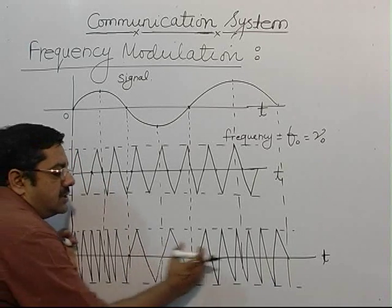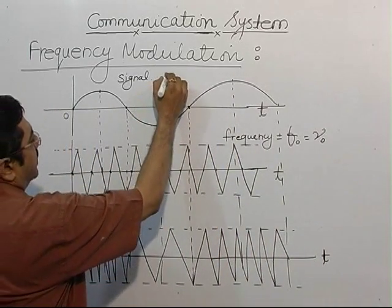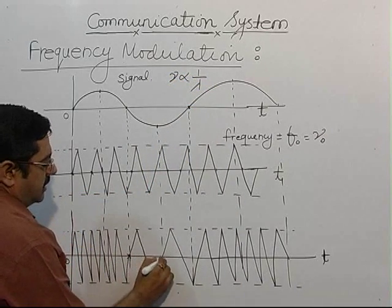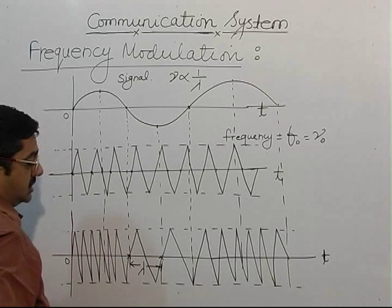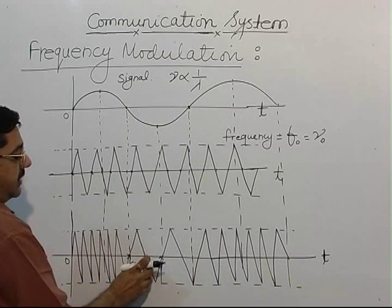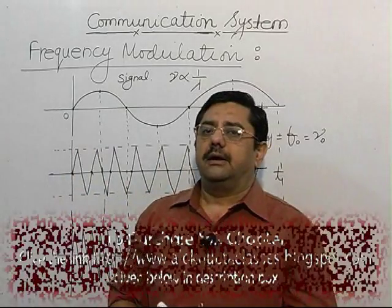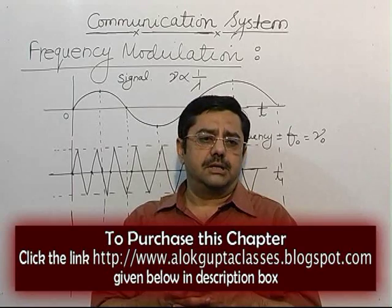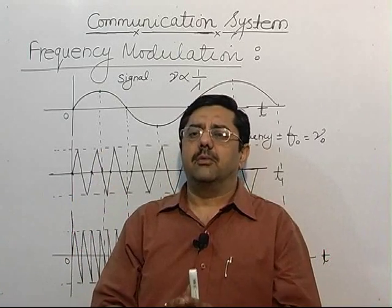Frequency is defined as the reciprocal of the wavelength. When frequency increases, the wavelength decreases; when frequency decreases, the wavelength increases. This type of modulation provides high fidelity and is used for musical purposes to send wider bandwidth signals — frequency modulation is used exactly for this.